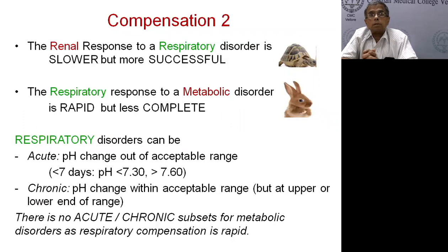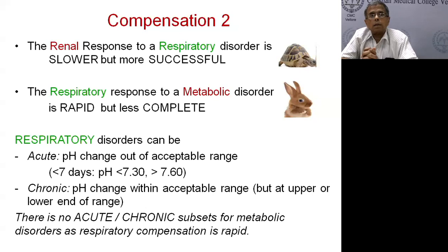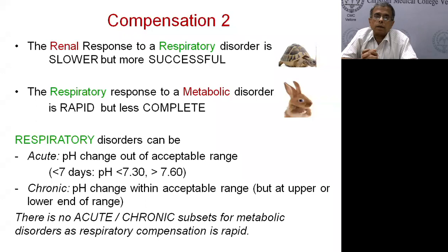The renal response to a respiratory disorder is slow but much more successful, whereas the respiratory response to a metabolic disorder is fast — within minutes — but less complete. Because the renal response is slower, respiratory disorders are classified into acute and chronic. In an acute disorder, the renal system has not kicked in adequately. A chronic disorder brings the pH change to the lower limit of the acceptable range. For metabolic disorders, there are no acute and chronic subsets because respiratory compensation is rapid.